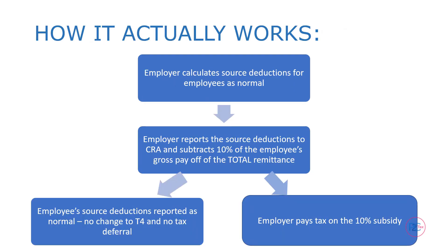This is how it actually works. What first happens is that the employer calculates source deductions on employees' paychecks like normal. Then the employer submits these source deductions to CRA, but instead of paying the government the full amount, they are allowed to reduce the payment by 10% of the employee's gross pay. We'll see an example of this shortly.